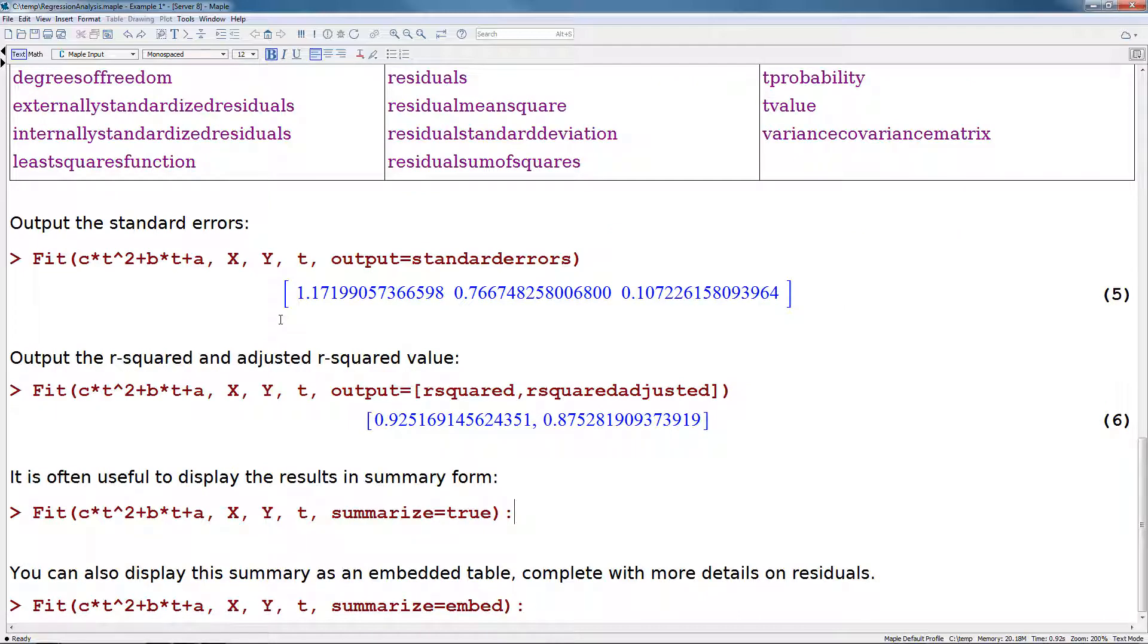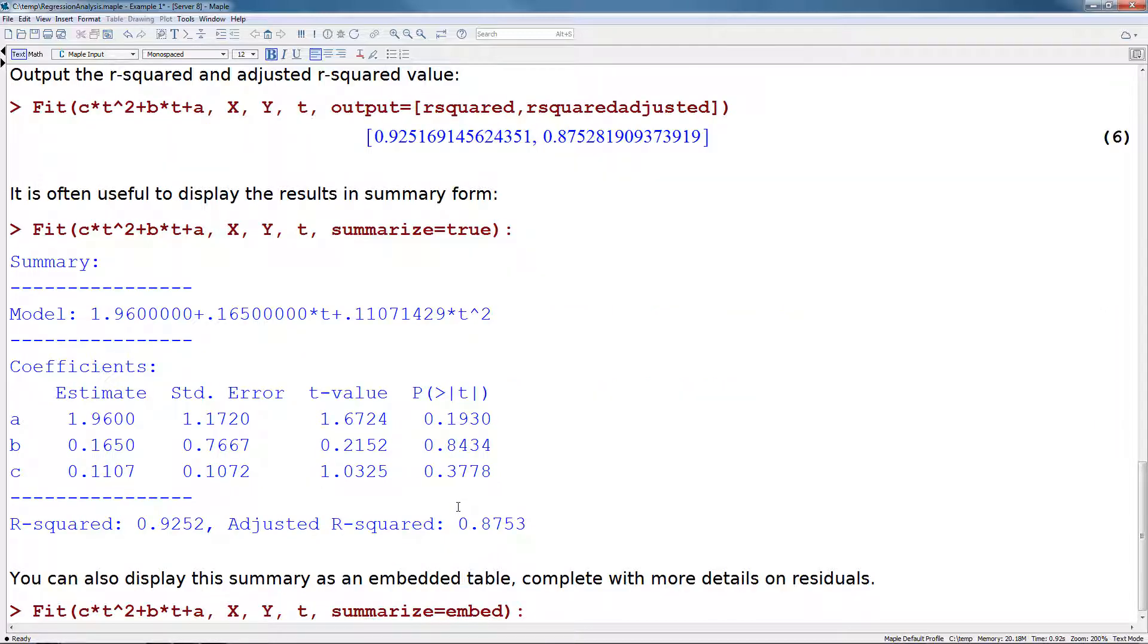It is often useful to display the results in summary form. If we add the summarize equals true option to the fit command, this gives us back a printed summary, which includes the resulting model, and for each one of the coefficients, there are standard errors, t values, and p values. At the bottom, you can read off the r squared as well as adjusted r squared values.